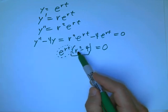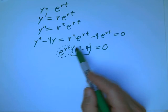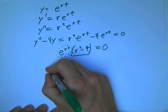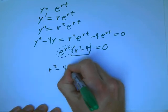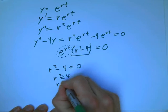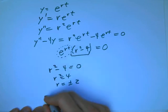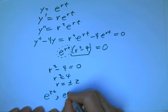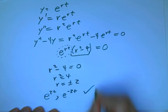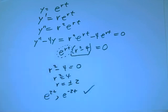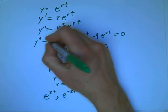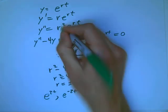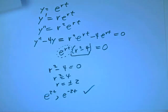If r was equal to 3, I'd get 5e to the 3t. That's not the zero function. If r was equal to 7, I'd get 45e to the 7t. It's not the zero function. The only way this is going to work is if r squared minus 4 equals zero, or r squared equals 4, or r equals plus or minus 2. So in fact, e to the 2t and e to the minus 2t, those both work as solutions to this particular differential equation.